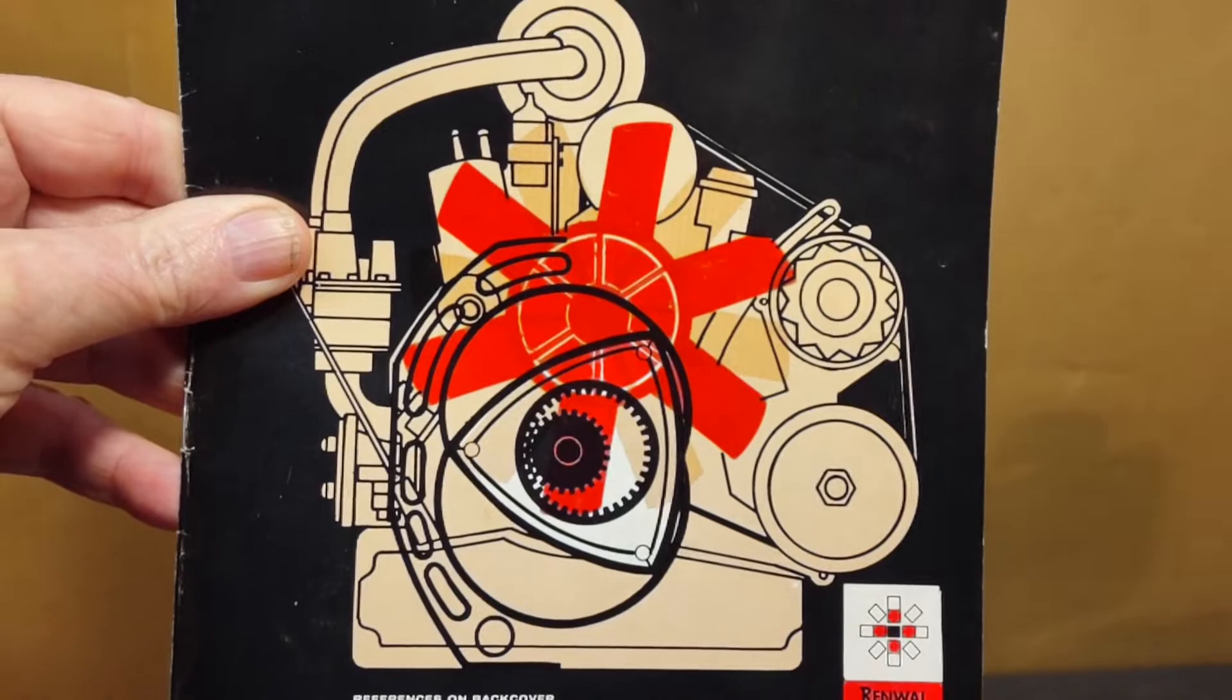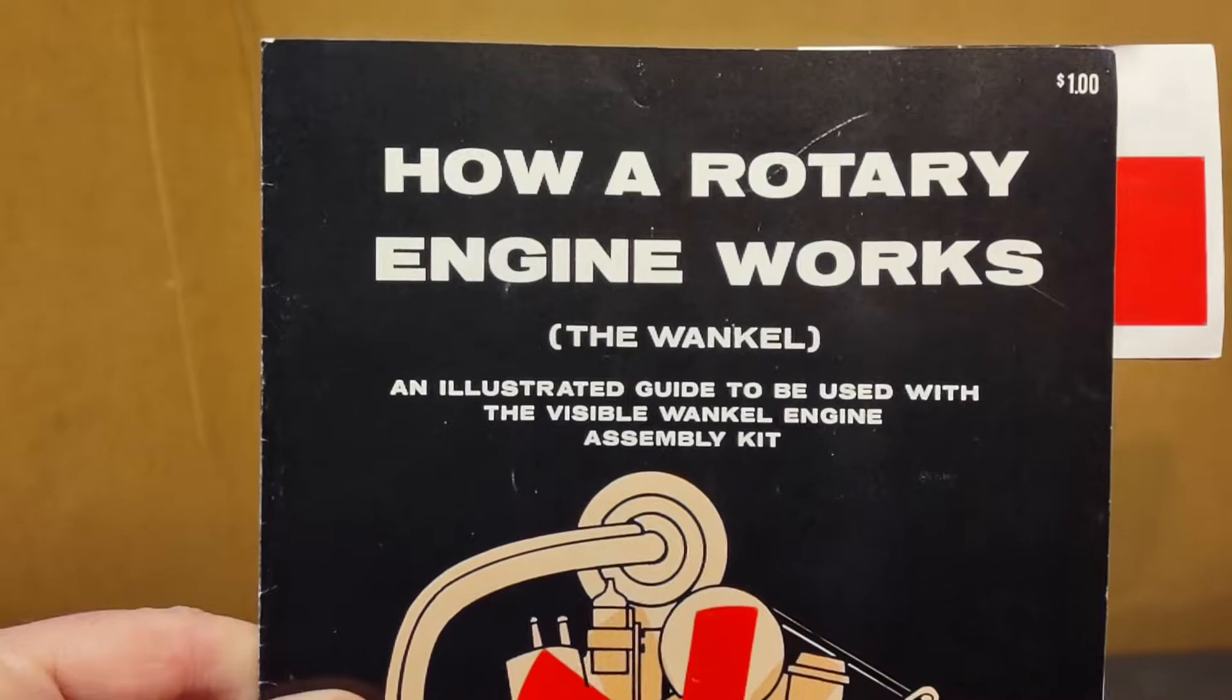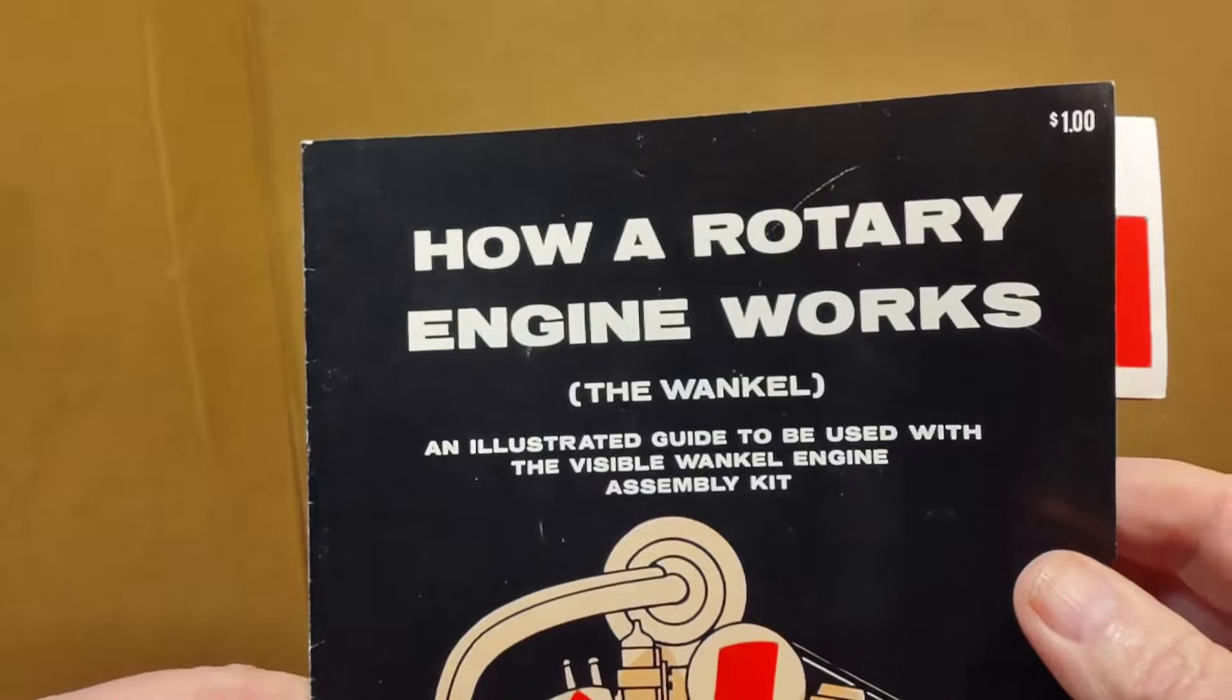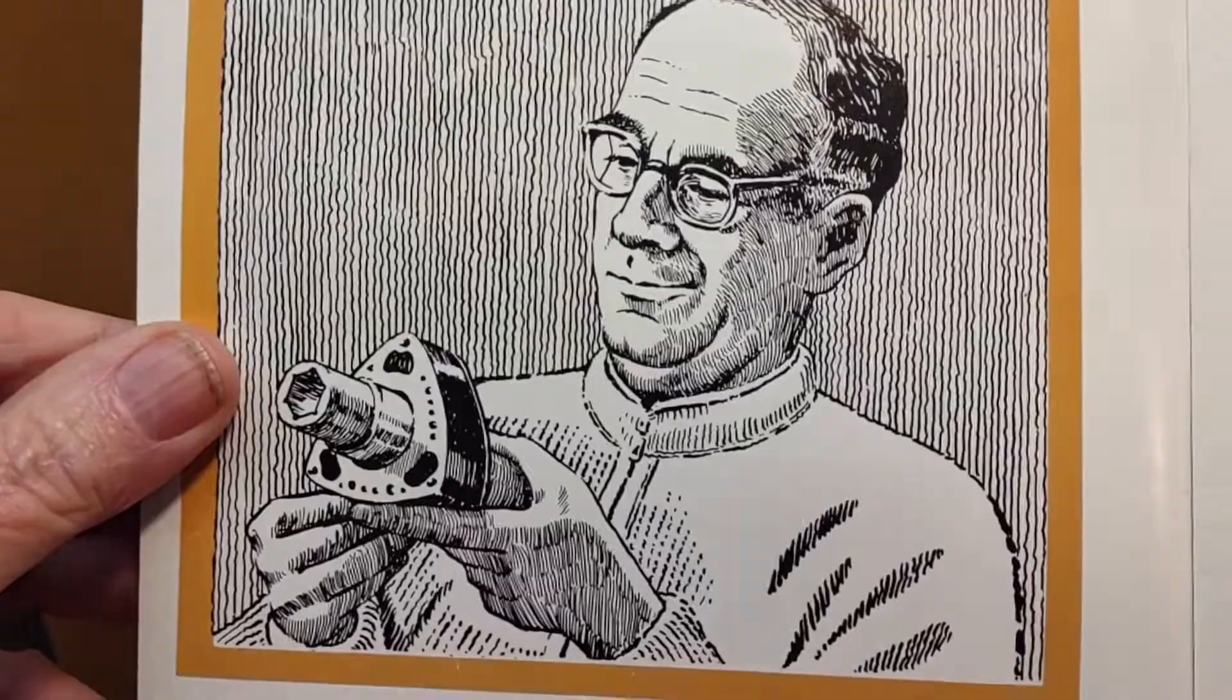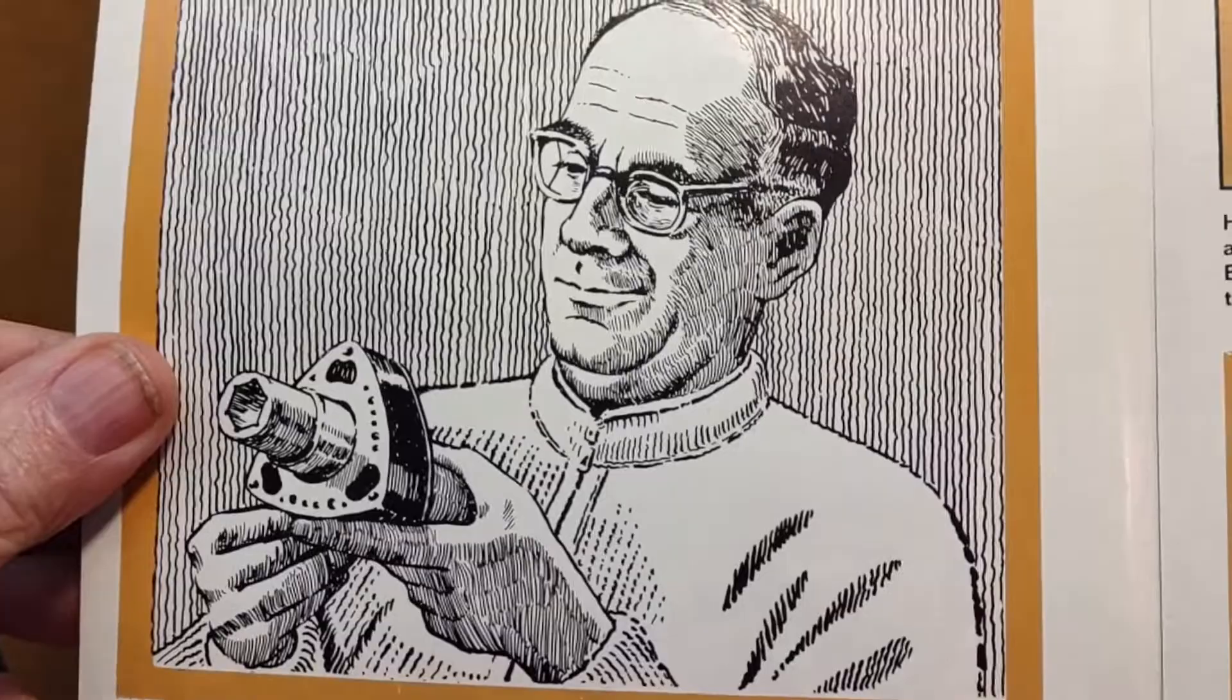This is the Renwall Visible Wankel Engine. This is some of the paperwork that came with the model. And here he is himself, looks like a proud papa, looking at the little item that made his engine go round and round.